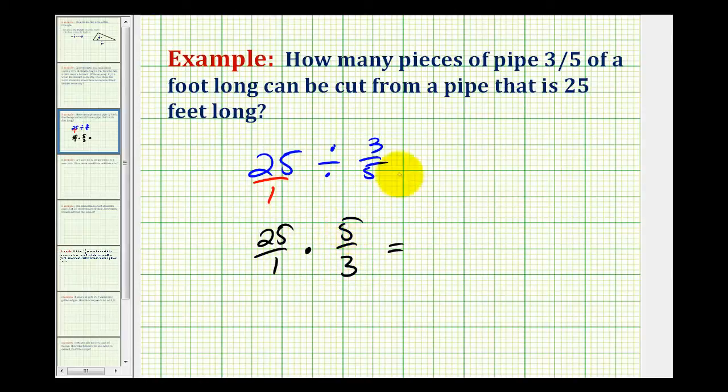So we have twenty five times five, that's one hundred twenty five. Our denominator is one times three, which is equal to three.